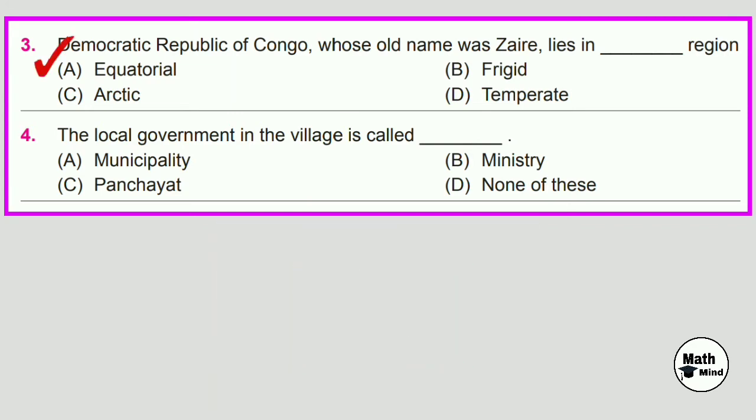Question No. 4: The local government in the village is called dash. Correct answer is C, Panchayat.